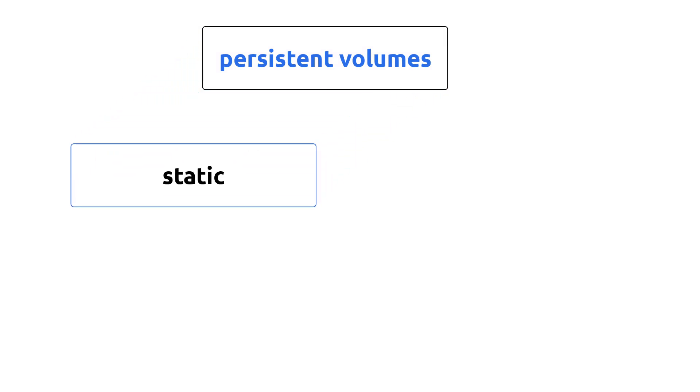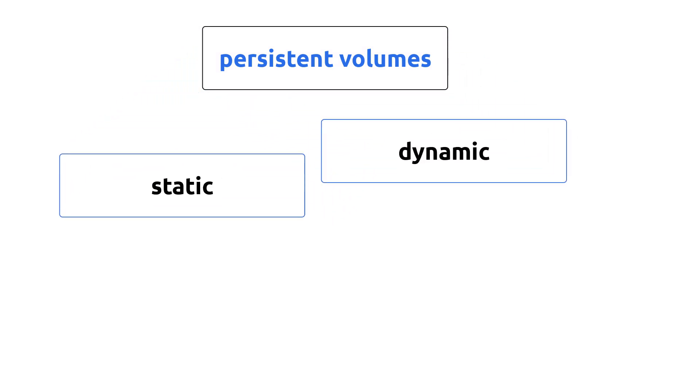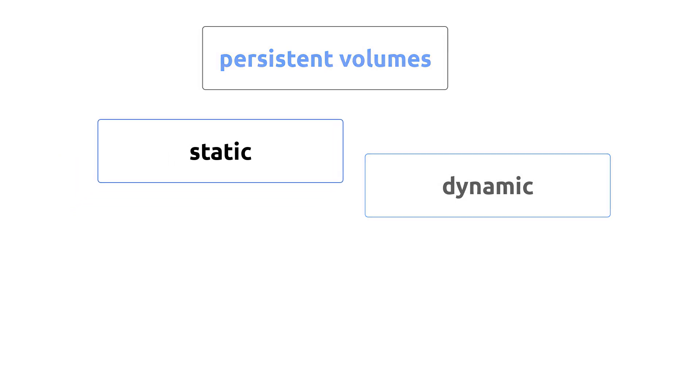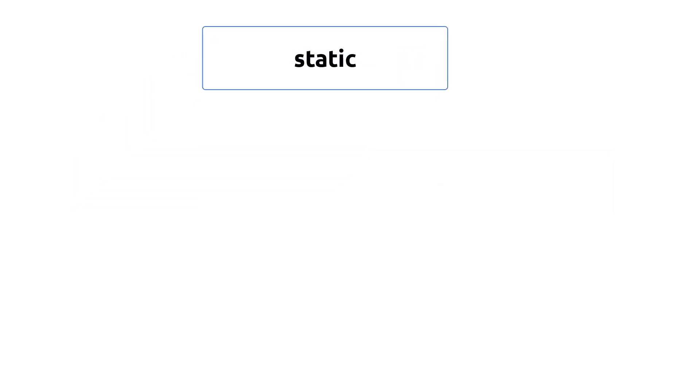Persistent volumes can be provisioned in two ways — the static way and the dynamic way. We'll first look at the workflow for provisioning a persistent volume using the static way.